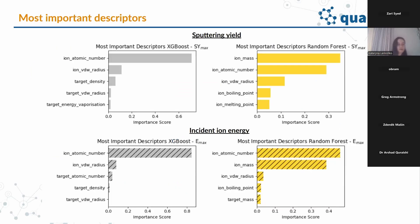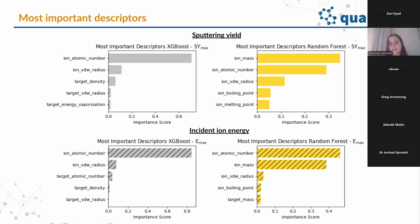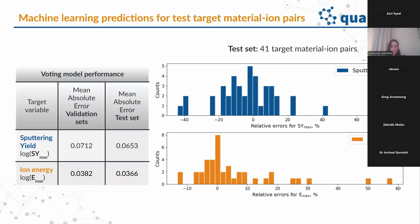We analyzed how different descriptors influenced ML predictions by examining the five most important descriptors for the two most successful models: XGBoost and random forest. For sputtering yield prediction, XGBoost relied predominantly on ion atomic number, and to a lesser extent on ion van der Waals radius, target density, target van der Waals radius, and energy of evaporation of the target. The random forest model was most affected by ion descriptors: ion mass, ion atomic number, van der Waals radius of the ion, and ion boiling and melting points. For the incident ion energy prediction, the two models relied on similar descriptors.